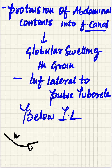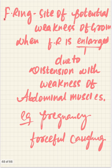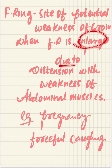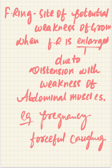The femoral hernia presents as a globular swelling inferolaterally, below the inguinal ligament. The femoral ring is a site of potential weakness of the groin. It becomes enlarged due to weakness of the abdominal muscles.